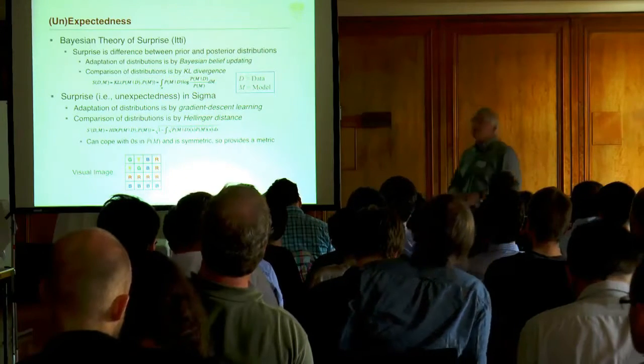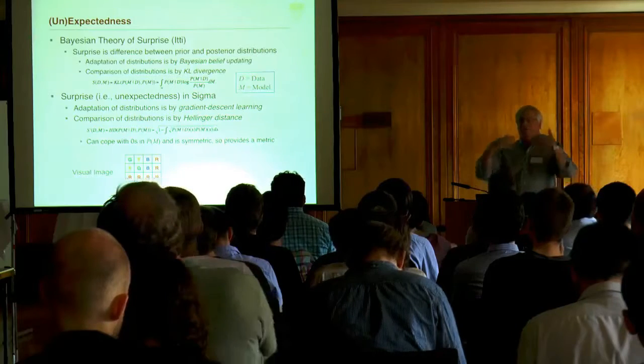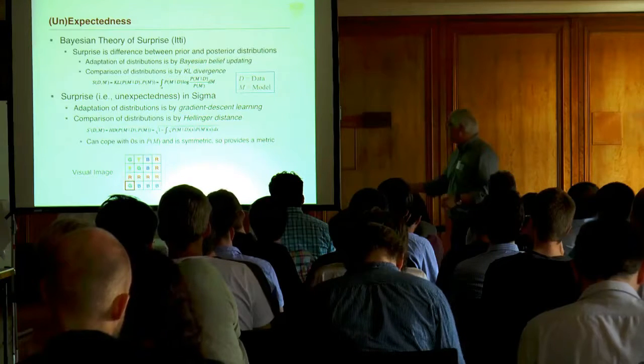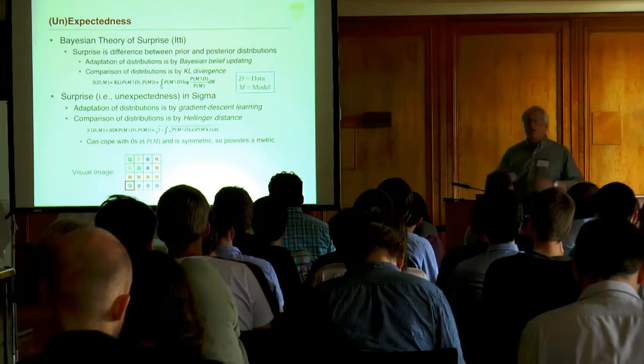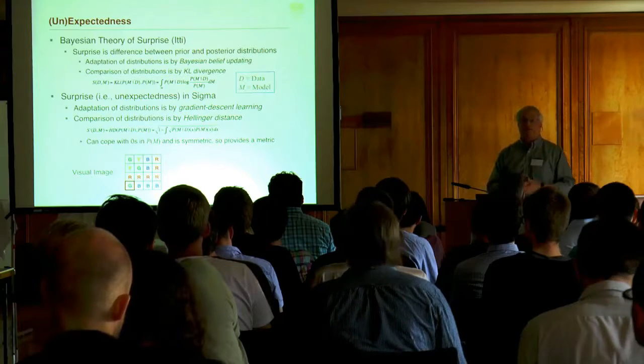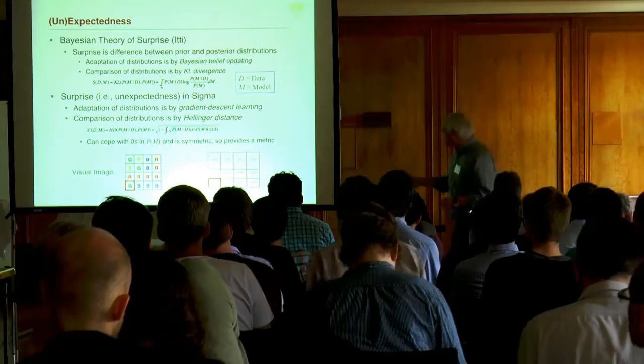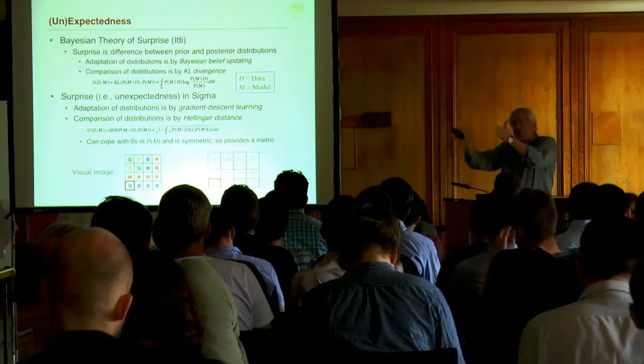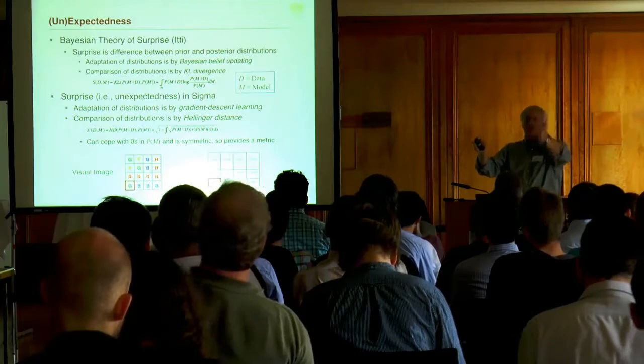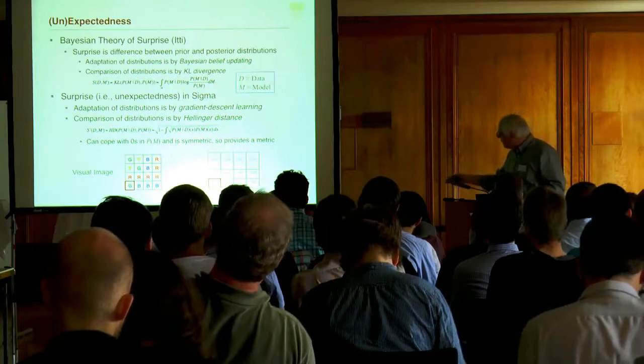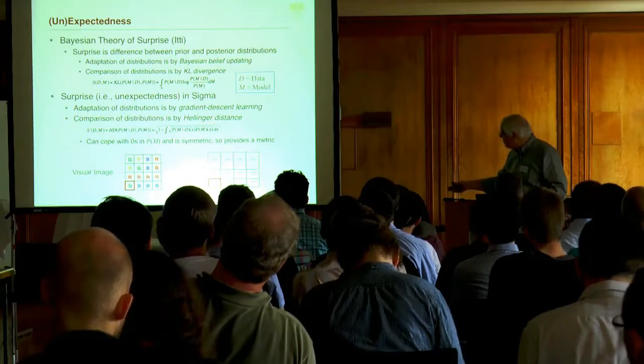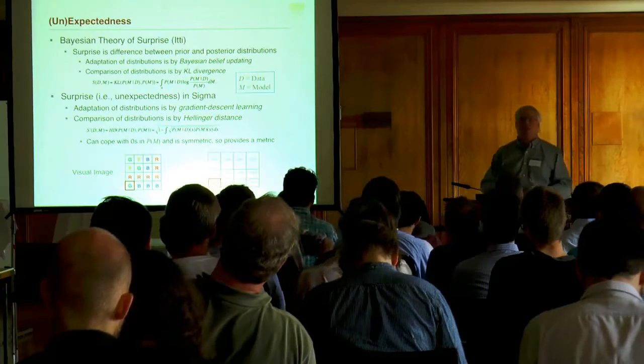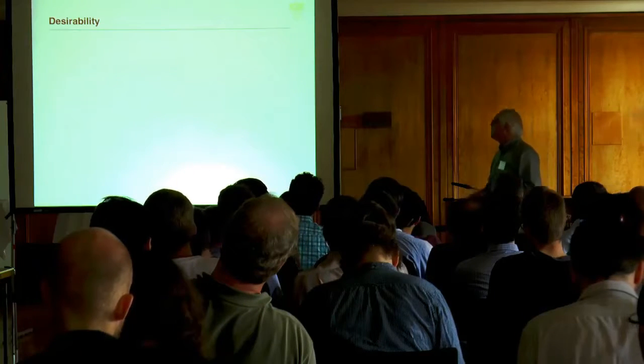Suppose we have a visual image here that you're looking at for a little while, so you build up a model of what's going on in the environment. Then part of it changes, this lower left corner goes from blue to green. You should be surprised to some extent because that violates your model. Using this we're able to compute a surprise map which compares at every point the posterior given the data to the model that is what you thought the world was like before you saw the data. The highest number by far is down here in the lower left corner. So this is a map of your surprise over the visual image for this particular time point.